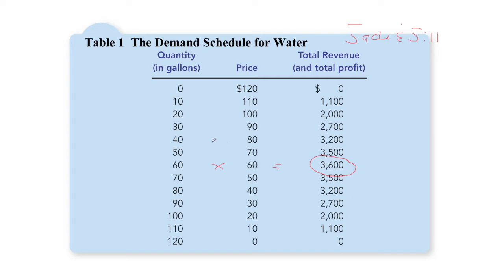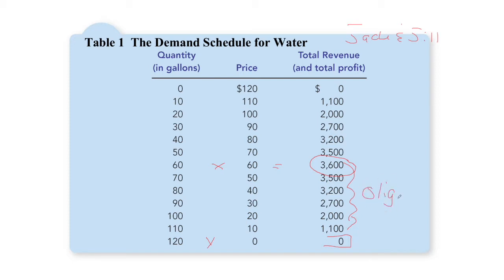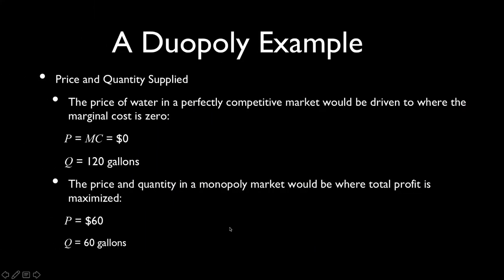By contrast, if this were a competitive market and firms could freely enter and exit at will, firms would probably enter until profit was driven to zero — 120 gallons would be produced and economic profit would end up zero. The oligopoly is going to end up somewhere between the monopoly outcome of 60 gallons and the competitive outcome of 120 gallons.